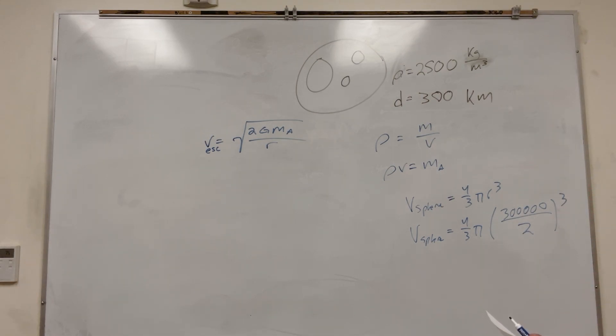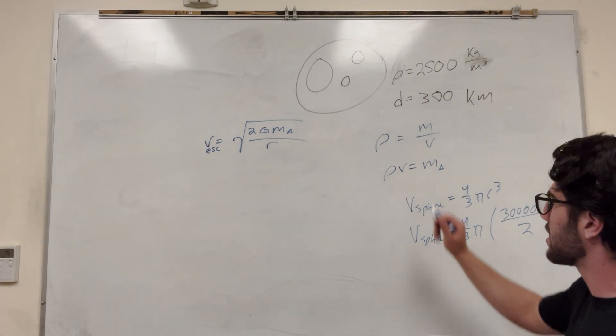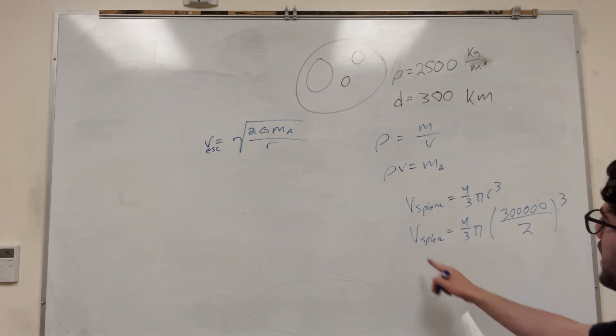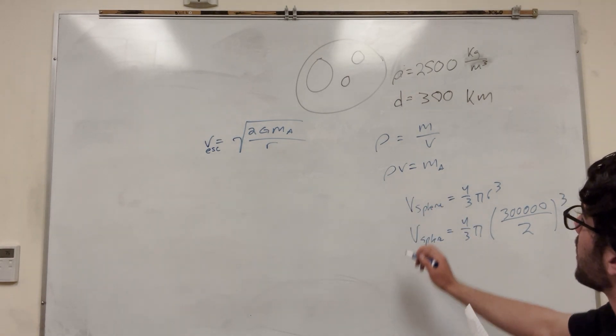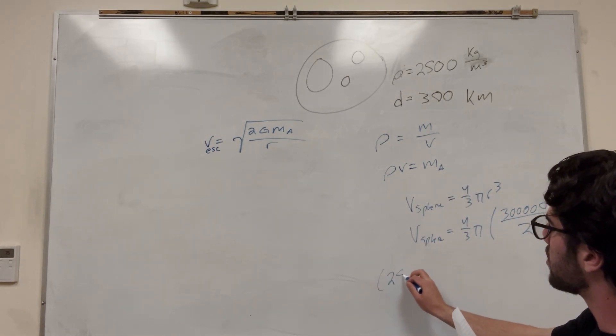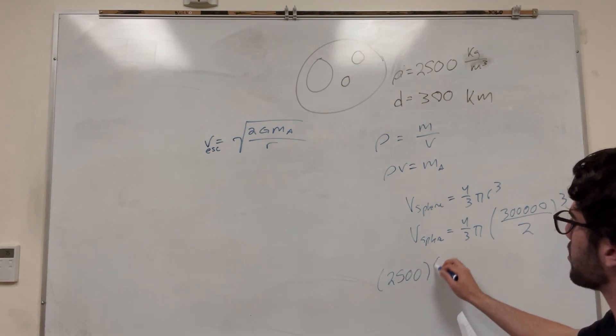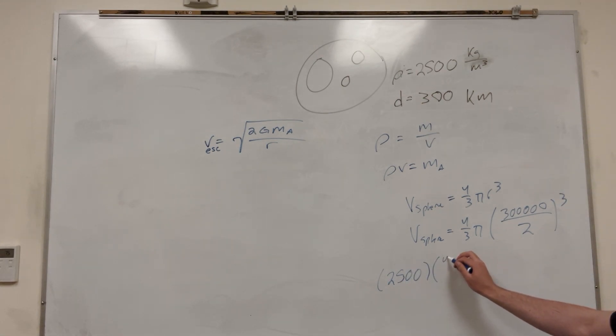Now basically, all you have to do is take that. I didn't calculate this, but I put it right in here. So we know our density is 2,500, and then multiply it by our volume, so 4 thirds pi, 300,000 divided by 2 cubed. This is going to be a big number, and that's equal to our mass.